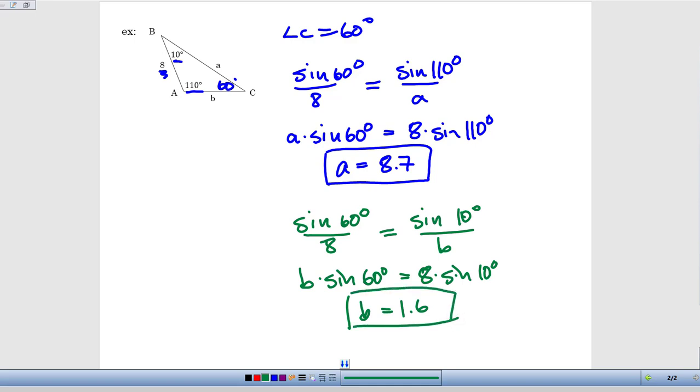And then again, we can do a quick double check to make sure that those answers make sense. That B being 1.6 should definitely be the smallest side of our triangle, since it's across from a 10 degree angle. Length A, the one that's across from the 110 degree angle, should be the longest side, 8.7 fits with that.